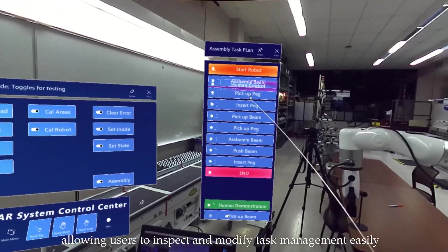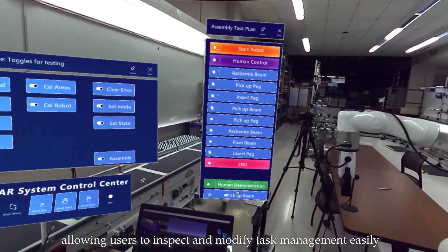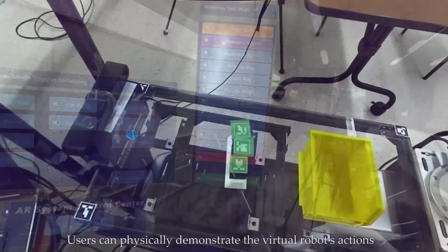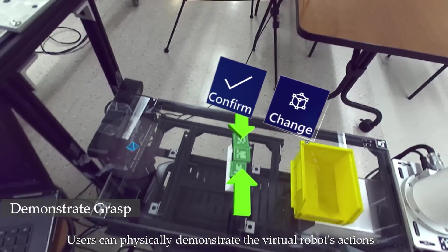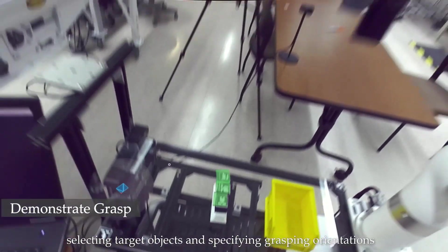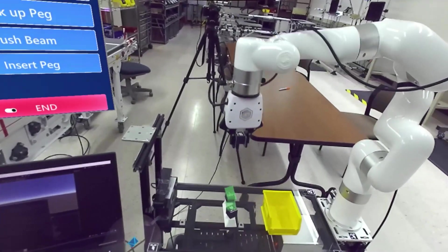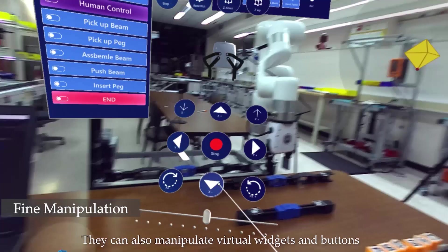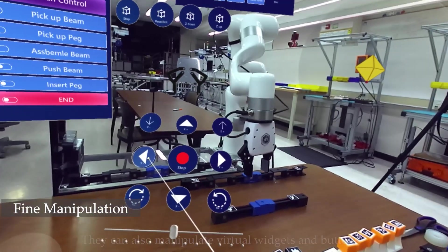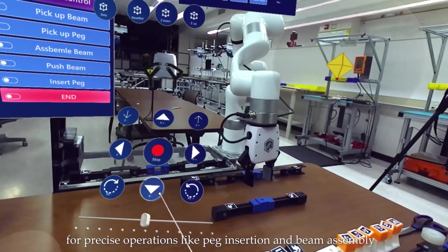Users can physically demonstrate the virtual robot's actions, selecting target objects and specifying grasping orientations. They can also manipulate virtual widgets and buttons for precise operations like peg insertion and beam assembly.